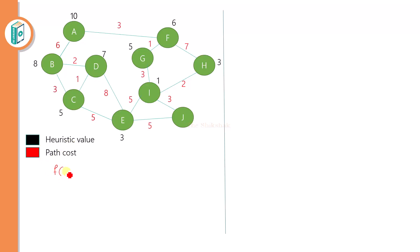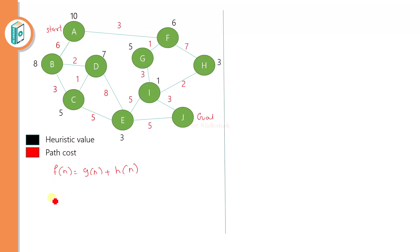Let's apply F(N) = G(N) + H(N) to find the cheapest solution. Here A is the start node and J is the goal node. From A, we can choose the path A to B or the path A to F. We need to find the best solution among these two. Let's calculate F(B) and F(F) using this formula.